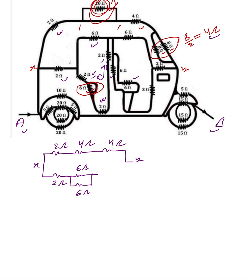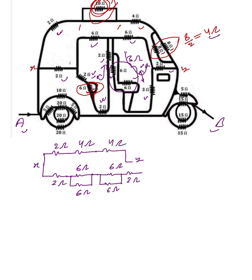So that parallel combination gives 3 ohm. These two 3 ohm are in series, so their combination is 6 ohm. This 6 ohm is in parallel with another 6 ohm combination, and together with 2 ohm in series we get: the equivalent of this section is 2 ohm.